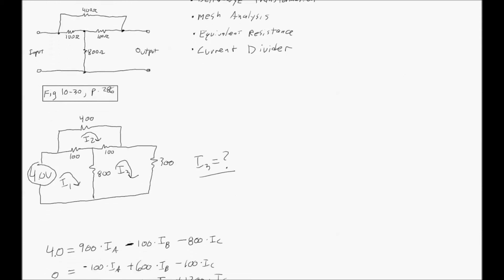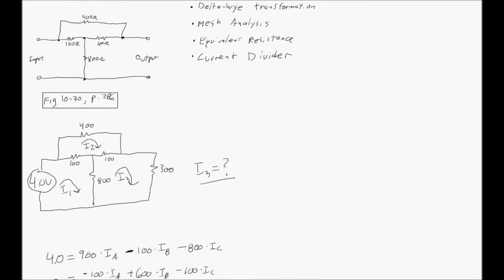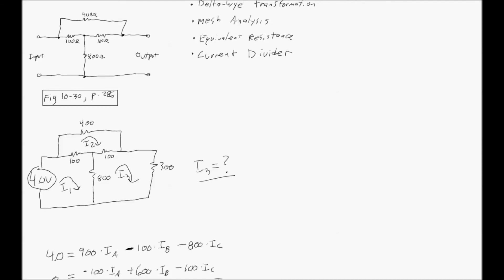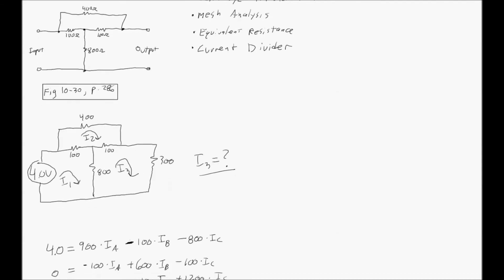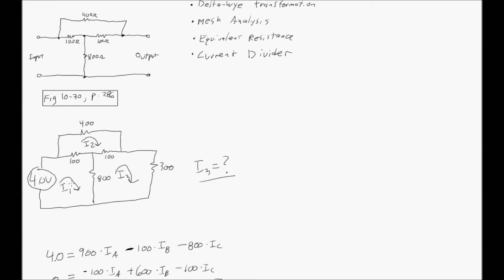I'm just going to show you how you do that. Without using delta-Y or current divider or equivalent resistance methods, you can go straight to mesh and solve it a heck of a lot easier and faster actually. Developing three current loops, I1, I2 and I3, we're solving for I3.